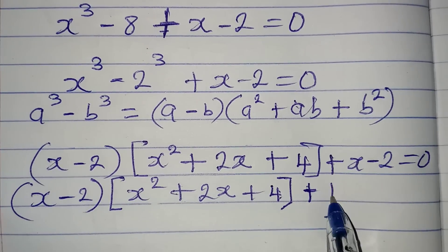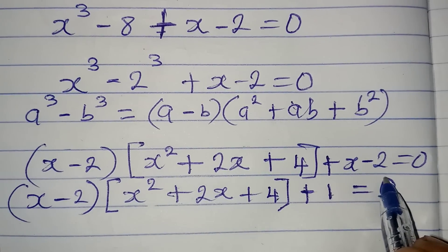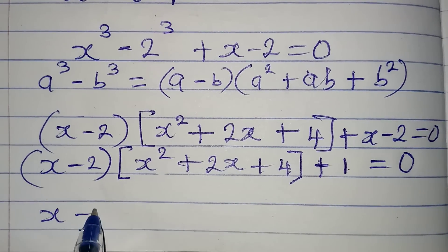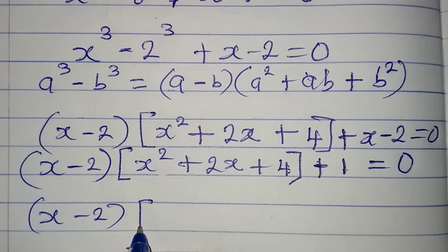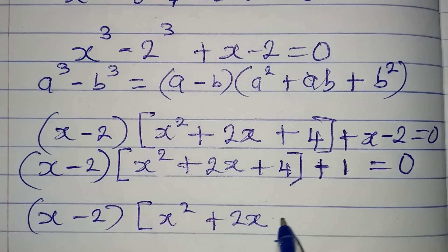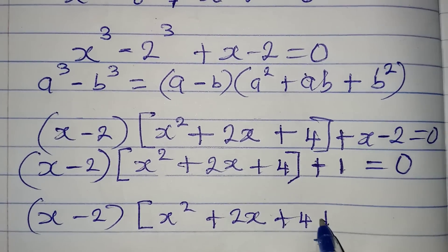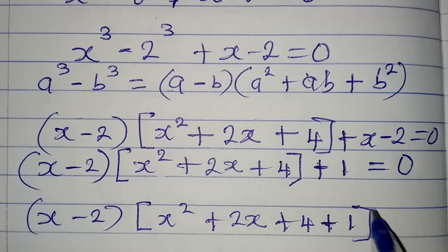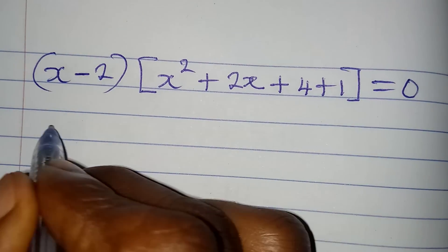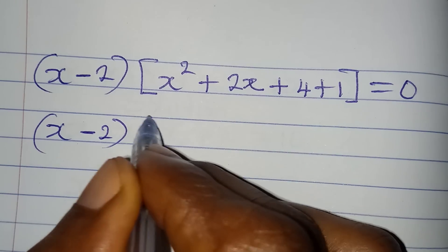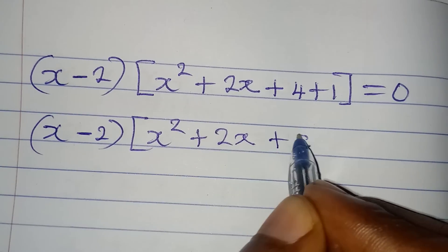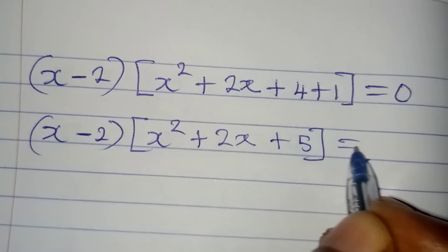Now I can factorize because x minus 2 appears in both terms. Factoring out x minus 2: we get x minus 2 in one bracket times (x squared plus 2x plus 4 plus 1), which simplifies to (x minus 2)(x squared plus 2x plus 5) equals 0.